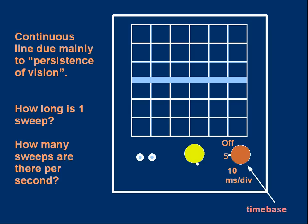Take a careful look at this. There are a couple of questions for you to answer. First, how long is one sweep? A sweep is one movement of the spot from the left all the way to the right. And the second question is, how many sweeps are there per second? Pause the video, see if you can work out the answer to those questions.